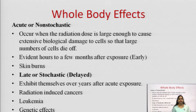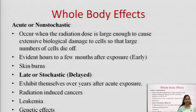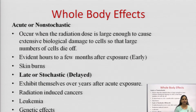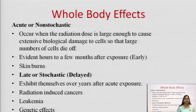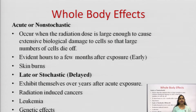Whole body effects can be divided into two categories: acute and late or delayed effects. In acute or non-stochastic effects, it occurs when the radiation dose is large enough to cause extensive biological damage to cells, so that a large number of cells die off.